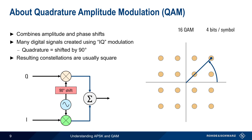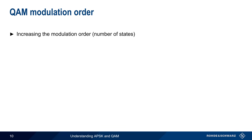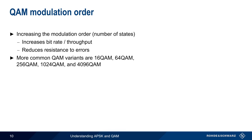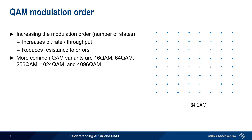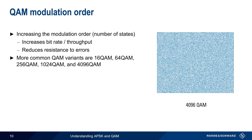If we increase the modulation order, or number of states, to 64, each point in the resulting 64 QAM constellation now corresponds to 6 bits. Recall that increasing the modulation order has two main effects. First, the higher number of bits per symbol means that the achievable bitrate, or throughput, also increases. On the other hand, higher order modulation also reduces resistance to errors, since the states or symbols are now closer together. That said, QAM is capable of supporting very high modulation orders. Some of the more common QAM variants are 16 QAM, 64 QAM, 256 QAM, 1024 QAM, and 4096 QAM, although other orders are possible.